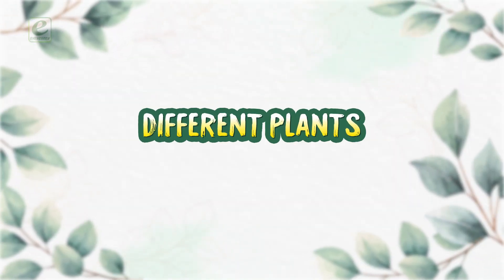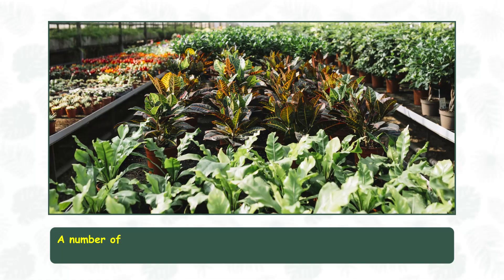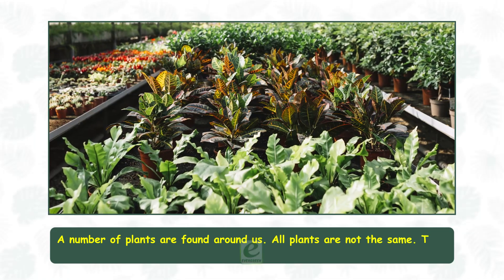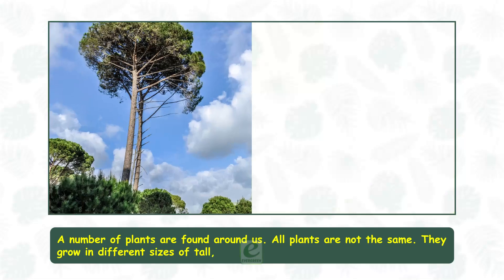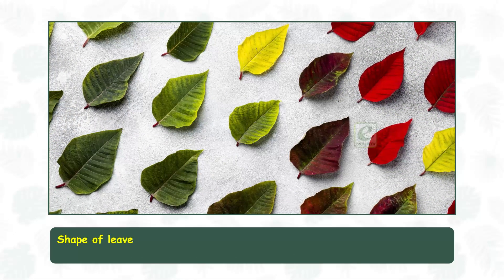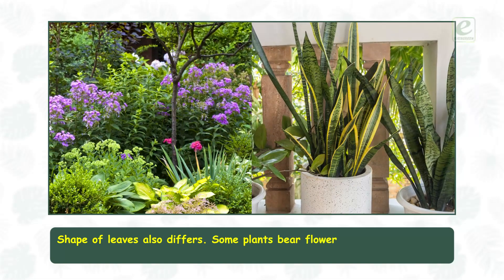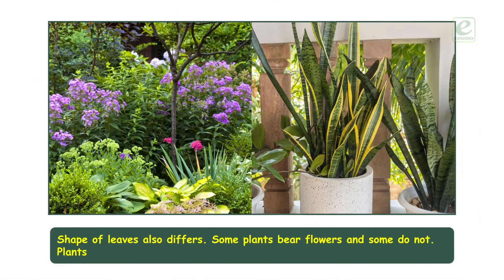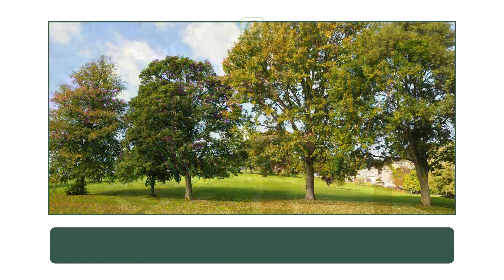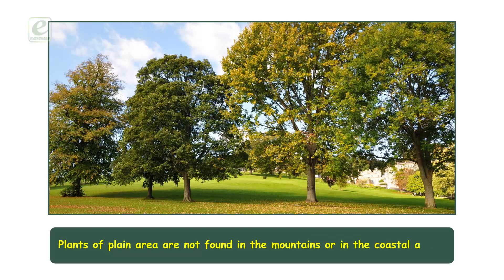Different plants. A number of plants are found around us. All plants are not the same. They grow in different sizes — tall, short, or small. The shape of leaves also differs. Some plants bear flowers and some do not. Plants change with the change in climate. Plants of plain areas are not found in the mountains or in the coastal areas.